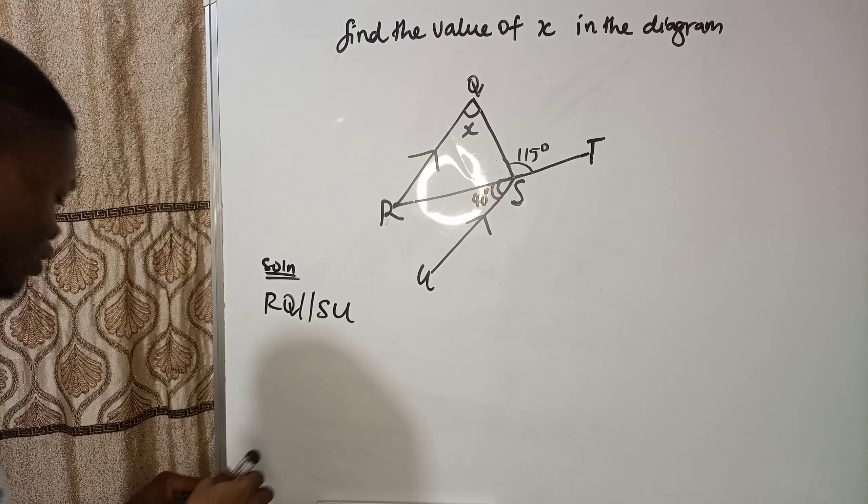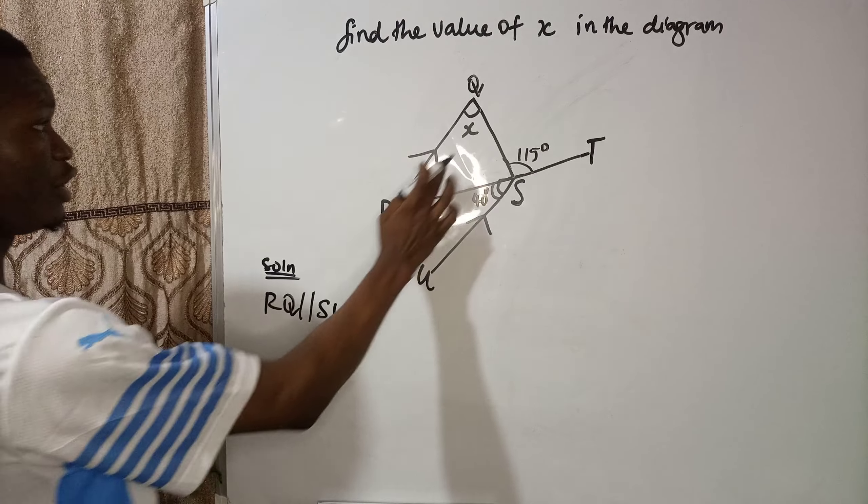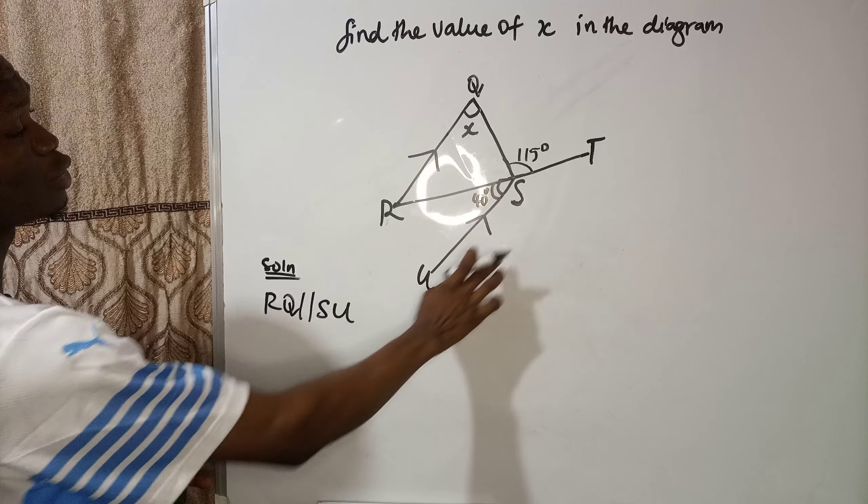So let's get back to this question. RQ is parallel to SU.